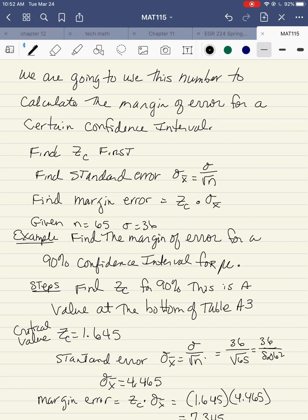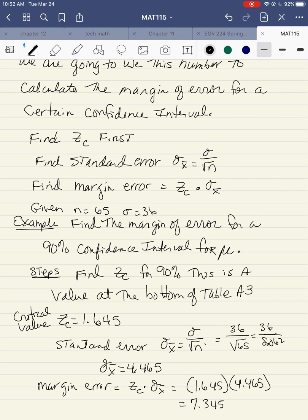So that's the standard error number. Then to get the margin of error, I take the critical value and multiply that by sigma x bar. So I get 1.645, that was my critical value, times 4.465. That's this number here. And that becomes 7.345.